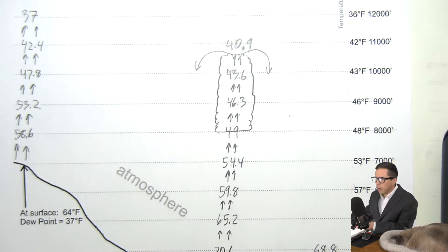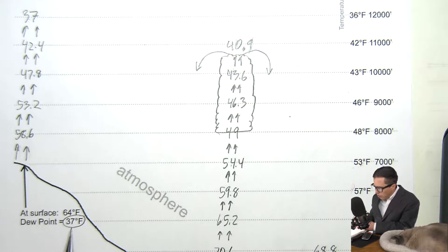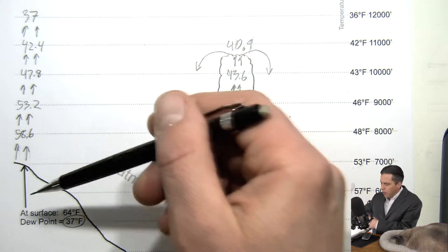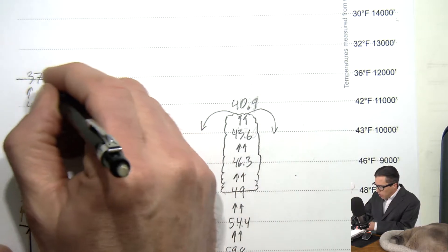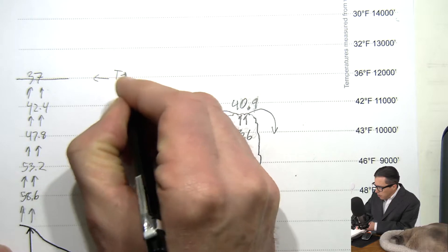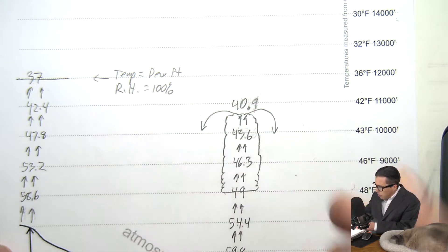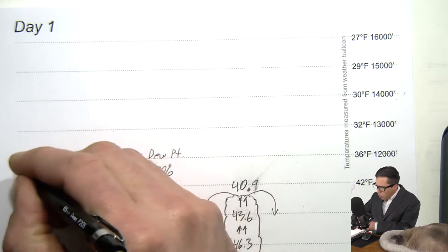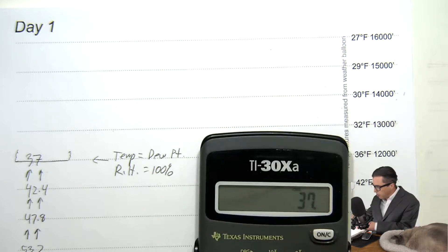Now 37 is warmer than 36, but you've got to keep track of what's happening because that's also the dew point. As you're doing these calculations, keep checking to see if you hit the dew point. My dew point is 37 — right there I hit it. So at this point the temperature is equal to the dew point, therefore the relative humidity is 100%. Once you have a cloud, instead of subtracting 5.4 you're subtracting 2.7, because the addition of latent heat helps keep the atmosphere warmer than it normally would be.